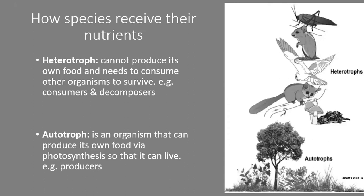Now we get into energy transfer — how energy moves through an ecosystem. First, you've got autotrophs: organisms that create their own food by photosynthesis, called producers — primarily plants. Then you have heterotrophs, which are species that cannot produce their own food and need to consume another organism to survive. These are the consumers and decomposers: your fungi, mammals, birds, insects, and so on.